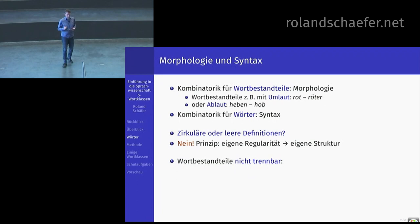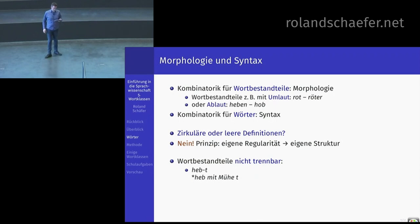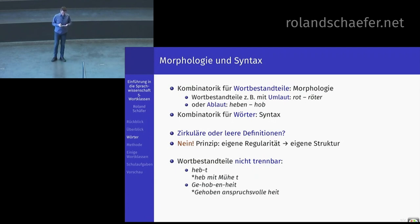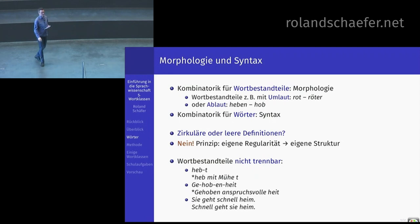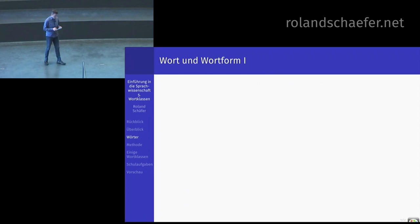Wortbestandteile sind im Gegensatz zu vollständigen Wörtern nicht trennbar. Hebt ist völlig okay – da kombinieren Sie Heb mit T. Heb mit Myrt geht nicht, Sie können nicht einfach etwas dazwischenschieben. Gehobenheit besteht aus vier Bestandteilen, aber 'gehoben anspruchsvoller Heit' geht nicht. Wörter kann man nicht trennen; ihre Bestandteile sind in der Syntax keine selbstständigen Einheiten mehr. Sie geht schnell heim – schnell geht sie heim: das ist Syntax, da schieben Sie vollständige Wörter hin und her.